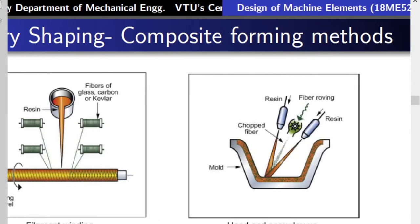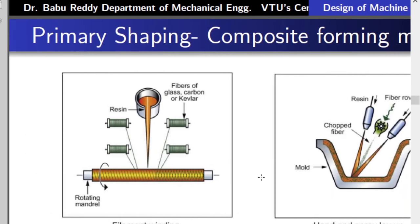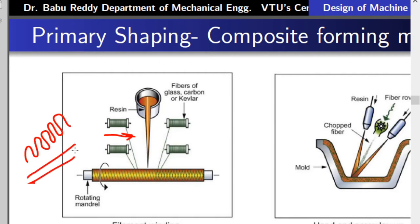Composite forming methods are used to form composites — a combination of two or more materials combined at the microscopic level. A composite has two types of materials: fiber, which is a thin thread-like long structure with high strength; and resin, a jelly-like or gum-like liquid structure. When fiber and resin are mixed and cured — either by heating or leaving at room temperature — they solidify into a hard part.